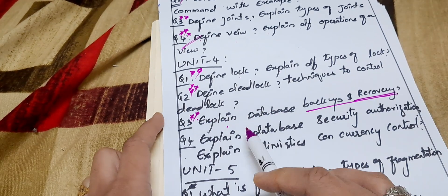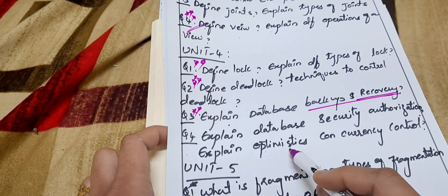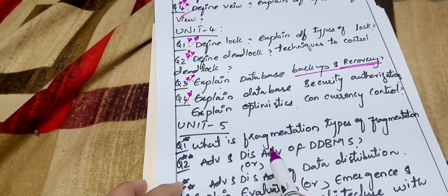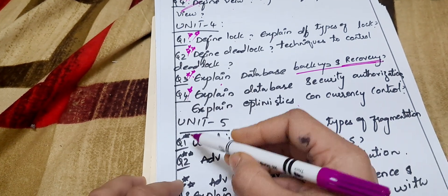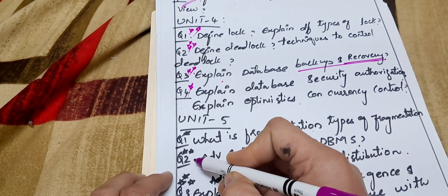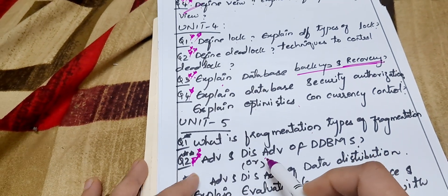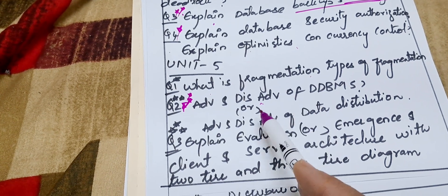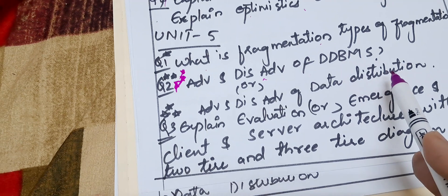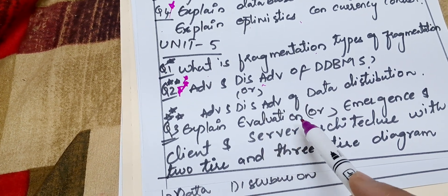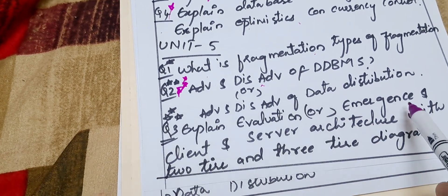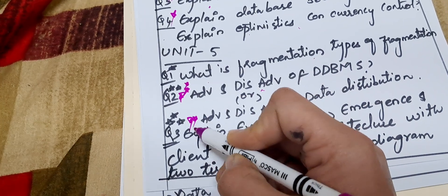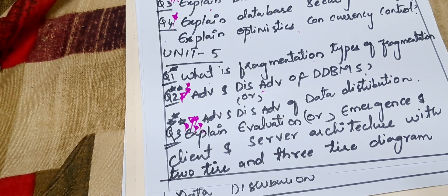Moving on to Unit 4: Question one — define lock and explain the different types of locks. Question two — define deadlock and techniques to control deadlock. These two are very important. Question three — explain database backup and recovery, database security and authorization, and optimistic concurrency control. Unit 5: Question one — what is fragmentation, types of fragmentation, advantages and disadvantages of DDBMS. Question two — advantages and disadvantages of data distribution. Question three — explain the evolution of client-server architecture with two-tier and three-tier diagrams. This is a very very important question.